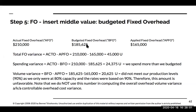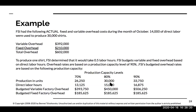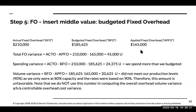The volume variance is the difference between my budgeted fixed overhead ($185,625) and my applied fixed overhead ($165,000), which is $20,625 unfavorable. This variance exists because we only achieved 80% production capacity by making 30,000 units. Had we achieved 90%, there would be no volume variance here.